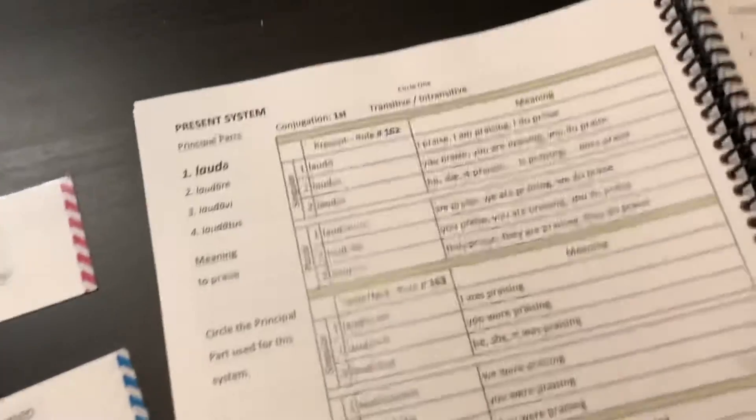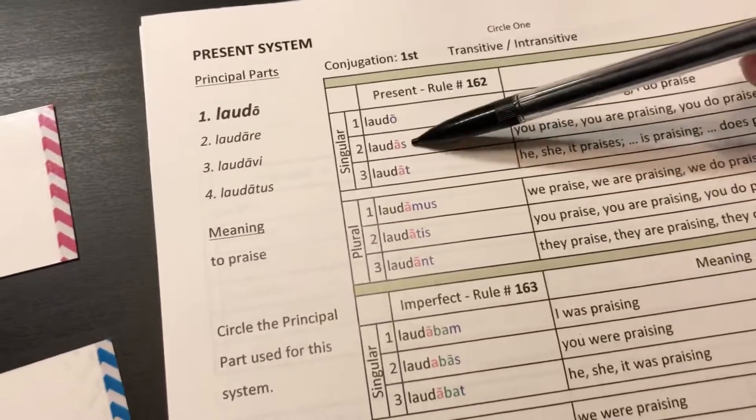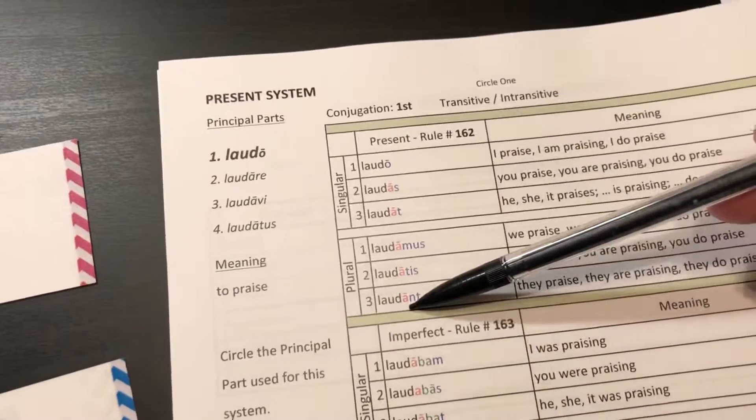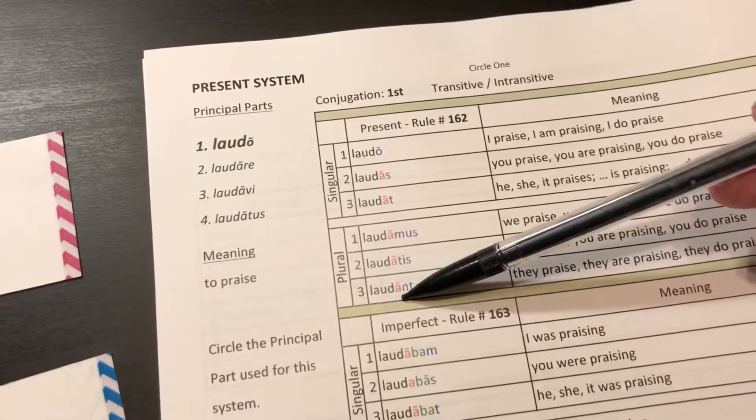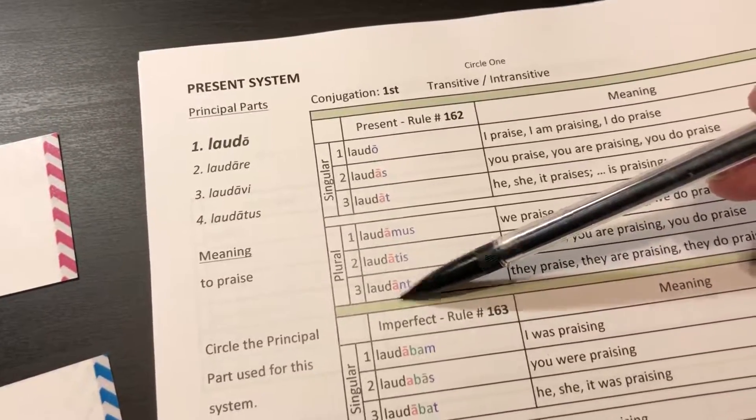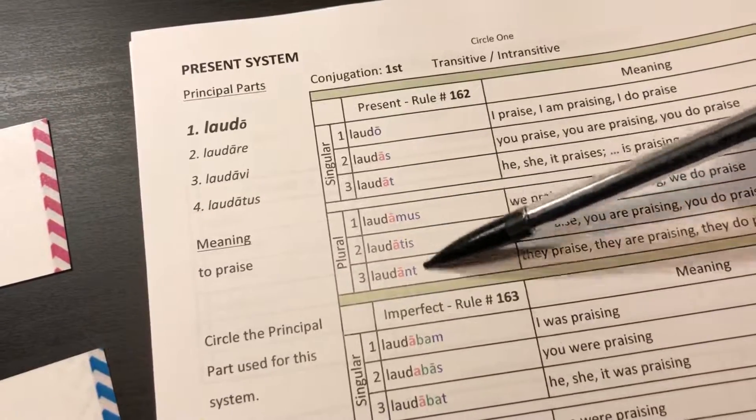In the present, I'm on the present stem here, the present tense of the present stem. Personal pronoun markers are in light blue. Conjugation marker is in pink.